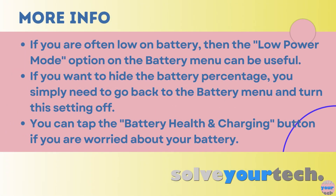One of the other options on this battery menu is called low power mode. If your iPhone is often low on battery, you can try this setting to see if it helps. It will adjust some settings on the device, but it can help make the battery last longer. If you decide that you don't like the way the battery percentage looks, you can always come back to the battery menu and turn this option back off.